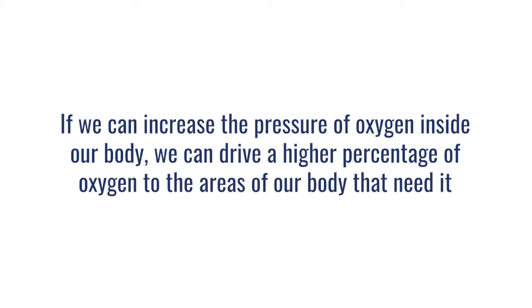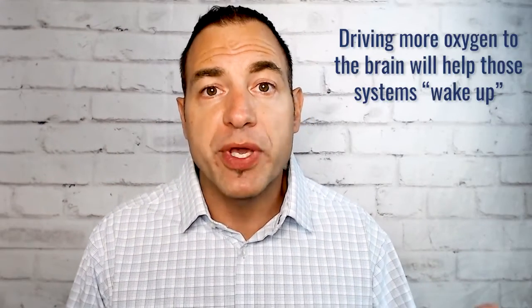One of the most important things we can do with most of these conditions is to reestablish a healthy level of oxygen — specifically, to reestablish a healthy concentration gradient of oxygen. If we can increase the pressure of oxygen inside the body, we can drive higher percentages of oxygen into all the areas that need it. If there's an area of the brain becoming hypoxic — due to capillary damage, inflammation blocking oxygen diffusion across a membrane, or downregulation of cell activity — by driving up the pressure of oxygen, we can drive more oxygen into those cells. As those cells pull that oxygen in and the mitochondria use it for aerobic respiration to make the energy needed for proper function, we can reboot those systems and start waking them up.